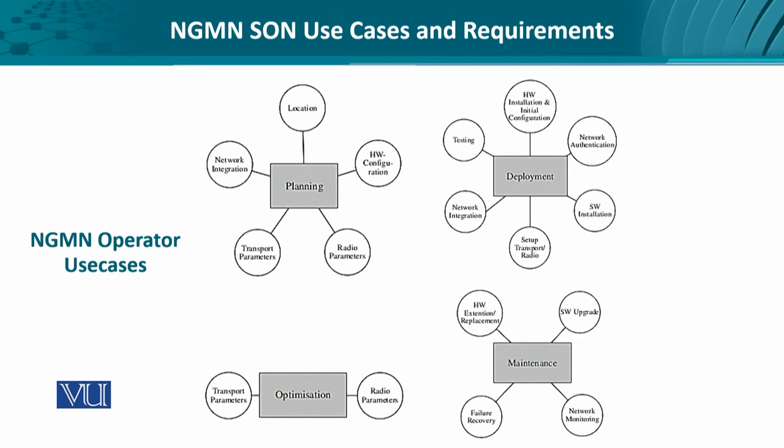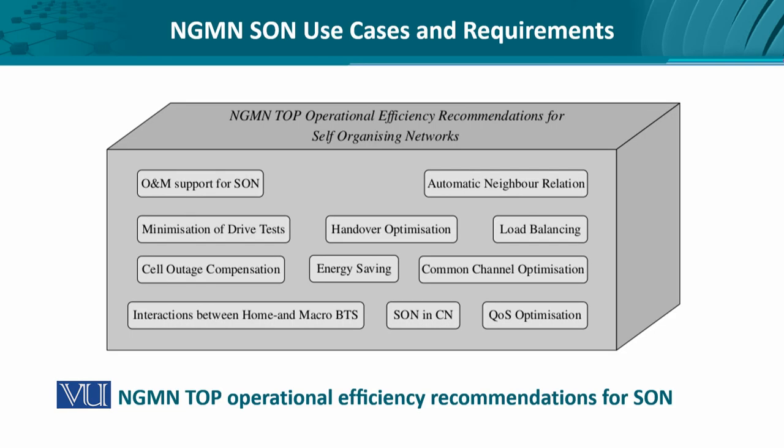So we can think about general next-generation mobile network operator use cases. These all stem out of these four stages. Once we talk about the recommendations made by telecom operators, they came up with the top operational efficiency recommendations — that is, the use cases which must be integrated from a self-organizing network perspective.